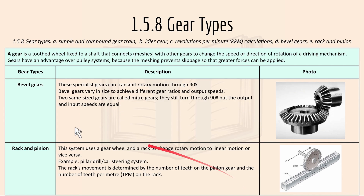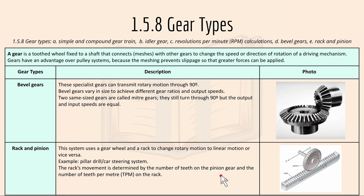Bevel gears are specialist gears that can transmit rotary motion through 90 degrees. Bevel gears vary in size to achieve different gear ratios and output speeds. Two same-size bevel gears are called mitre gears and they turn through 90 degrees with equal input and output speeds. Finally, rack and pinion uses a gear wheel and a rack to change rotary motion to linear motion or vice versa, for example in a pillar drill or a car steering system. The rack's movement is determined by the number of teeth on the pinion gear and the number of teeth per metre on the rack.